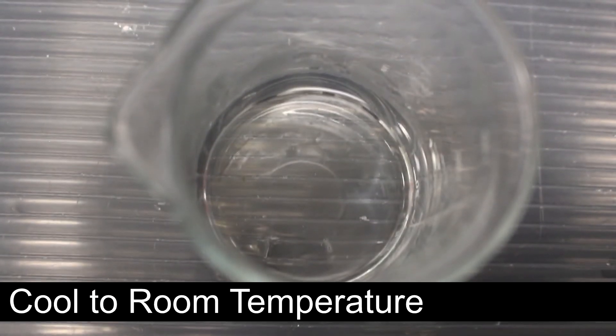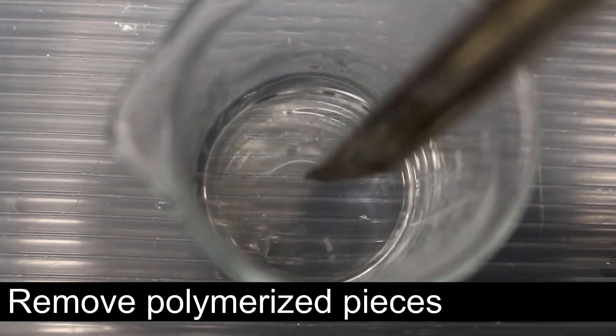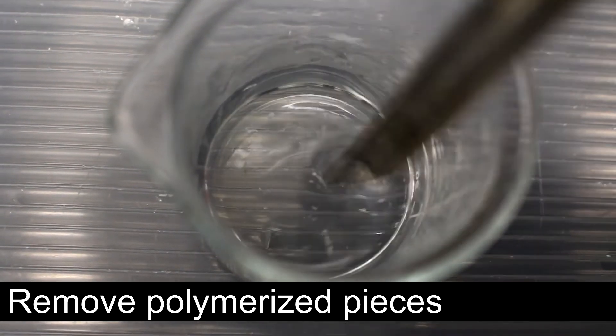The solution is left to cool to room temperature, then the solution is checked for polymerized pieces on the surface which are removed with a metal stirring rod.